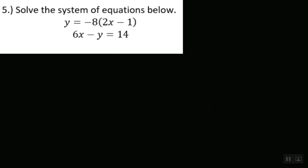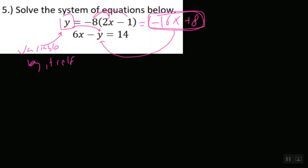Alright, let's move on to our fifth and final example. Here's our fifth and final example. We want to solve the system of equations below. We got y equals negative 8, parentheses 2x minus 1, and 6x minus y equals 14. Now guys, notice this falls squarely under the category of having a single variable by itself. A variable by itself. So, if we have a variable by itself, we know that we are going to use substitution. Let's go ahead and clean this up just a little bit. If I were to ask you, what is negative 8 times 2x? Well, you would say negative 16x, and negative 8 times negative 1 would be positive 8.